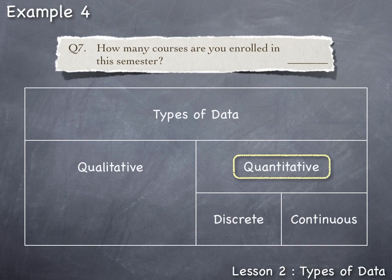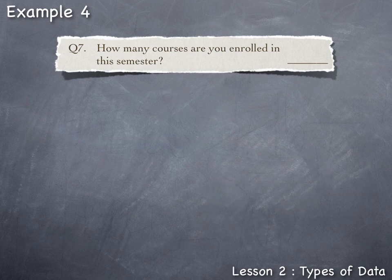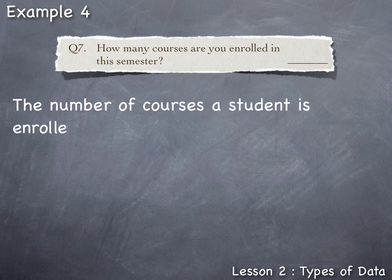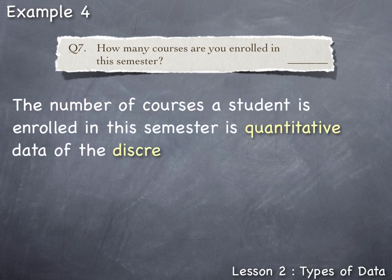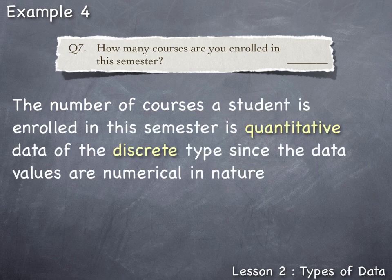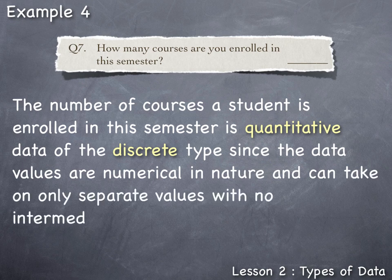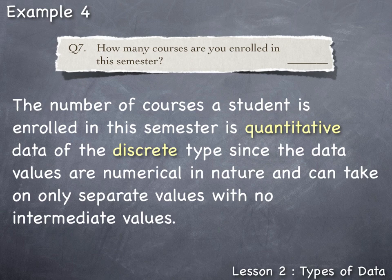Therefore this type of data is discrete. So the number of courses a student is enrolled in this semester is quantitative data of the discrete type since the data values are numerical in nature and can take on only separate values with no intermediate values.